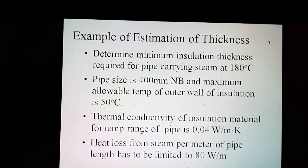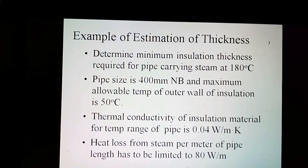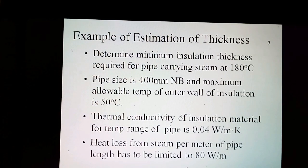Estimation of thickness for heat loss: Determine the minimum insulation thickness required for a pipe carrying steam at 180 degrees centigrade. The pipe size is 400 millimetres diameter, and the maximum allowable temperature at the outer surface of insulation is 50 degrees centigrade. Thermal conductivity of the insulation material is 0.04 W per meter per degree Kelvin. The heat loss of steam per meter of pipe length has to be limited to 80 W per meter.